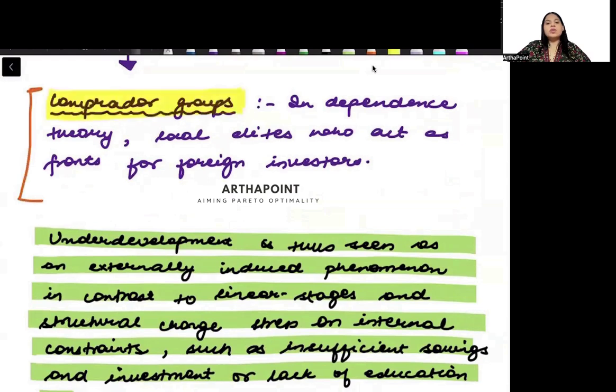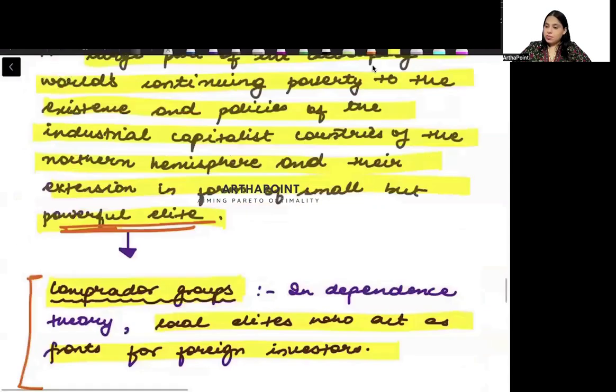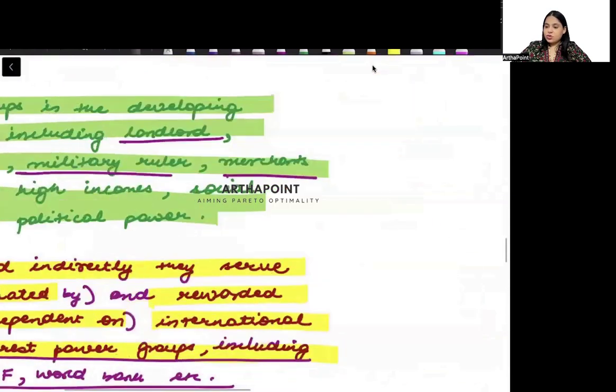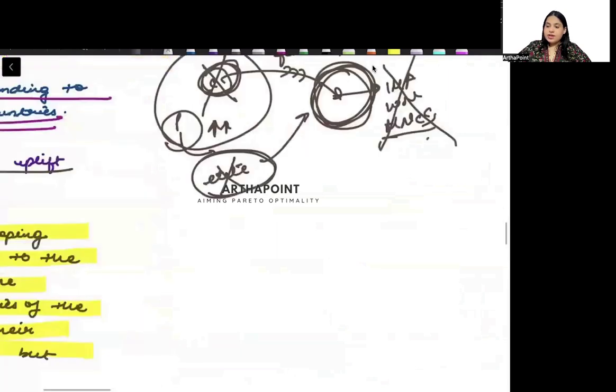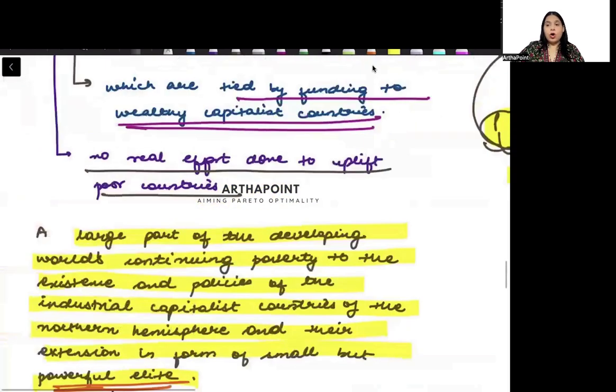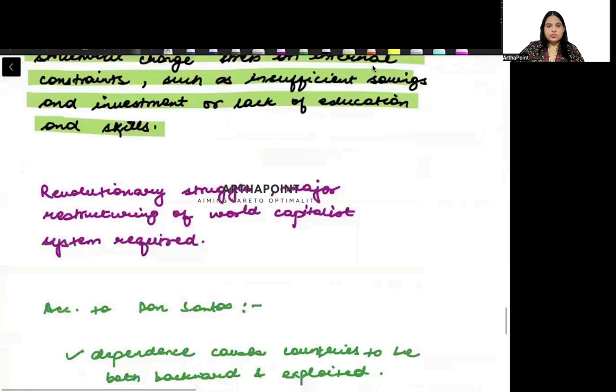These local elites who act as fronts for foreign investors are called comrader groups. Some people living in developing countries earn money from outside and favor them. These elite groups are called comraders.